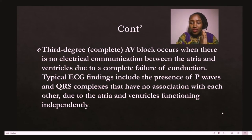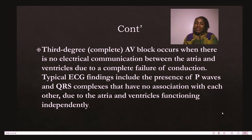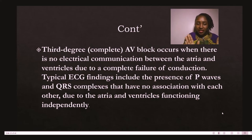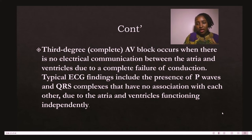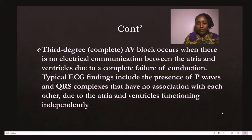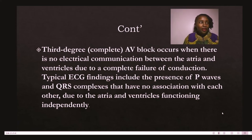Third-degree or complete atrioventricular block occurs when there is no electrical communication between the atria and the ventricles due to complete failure of conduction. On the ECG you will have P waves and QRS complexes, but they are not related — they don't appear to come from the same heart. The atria and ventricles are functioning independently. Normally there is synchronization — 'lub' when blood moves into the ventricles from the atria, and 'dub' when blood moves out of the ventricles — but in complete heart block this association is absent, resulting in abnormal heart sounds.